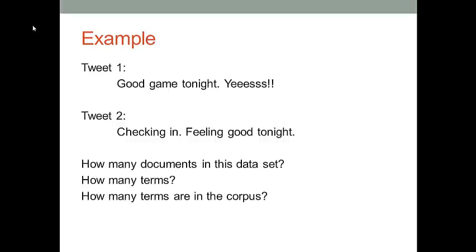The first two questions are easier, right? How many documents do we have in this data set? So we just count the number of tweets. We have two tweets. So we have two documents from a text mining perspective. How many terms do we have? We just count the number of words in these two documents. Let's count the first one. We have one, two, three, four words. So we have four terms from the first tweet. And then in the second tweet, we have one, two, three, four, five words. We have five terms from the second tweet. Totally we have nine terms in this data set.